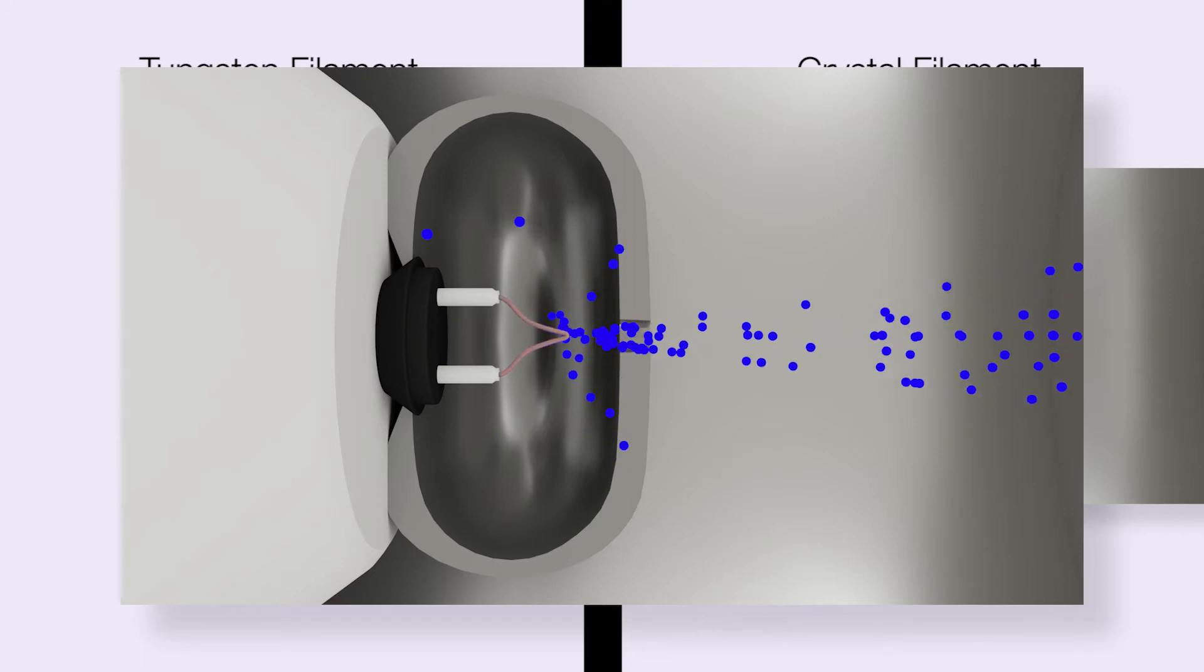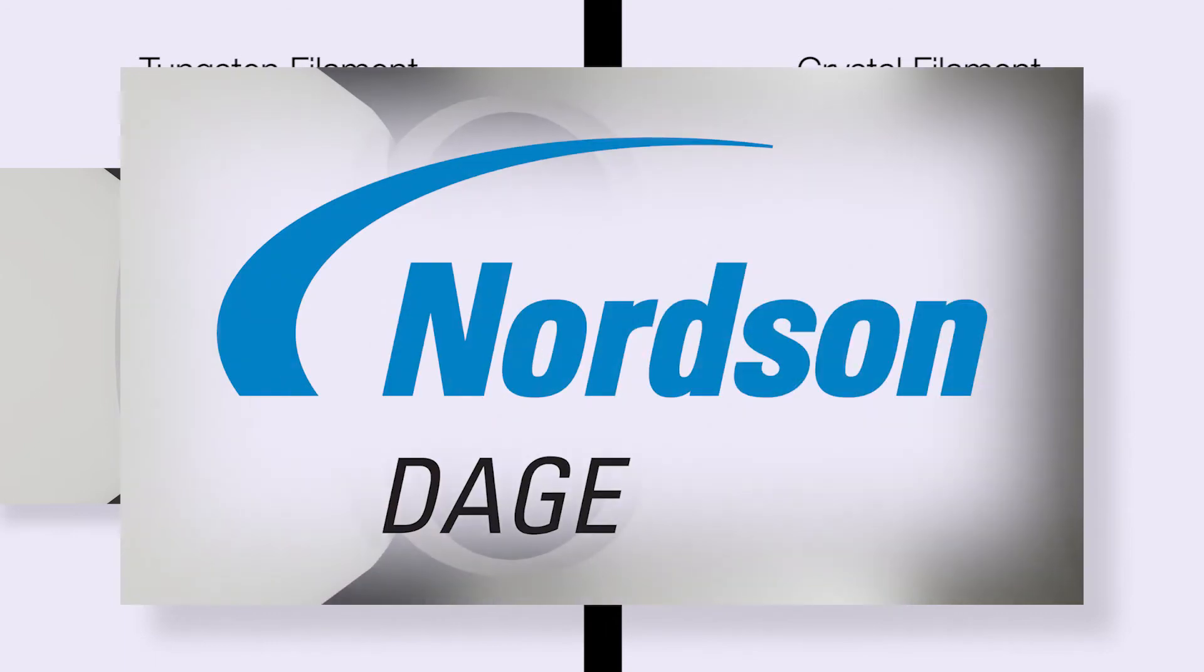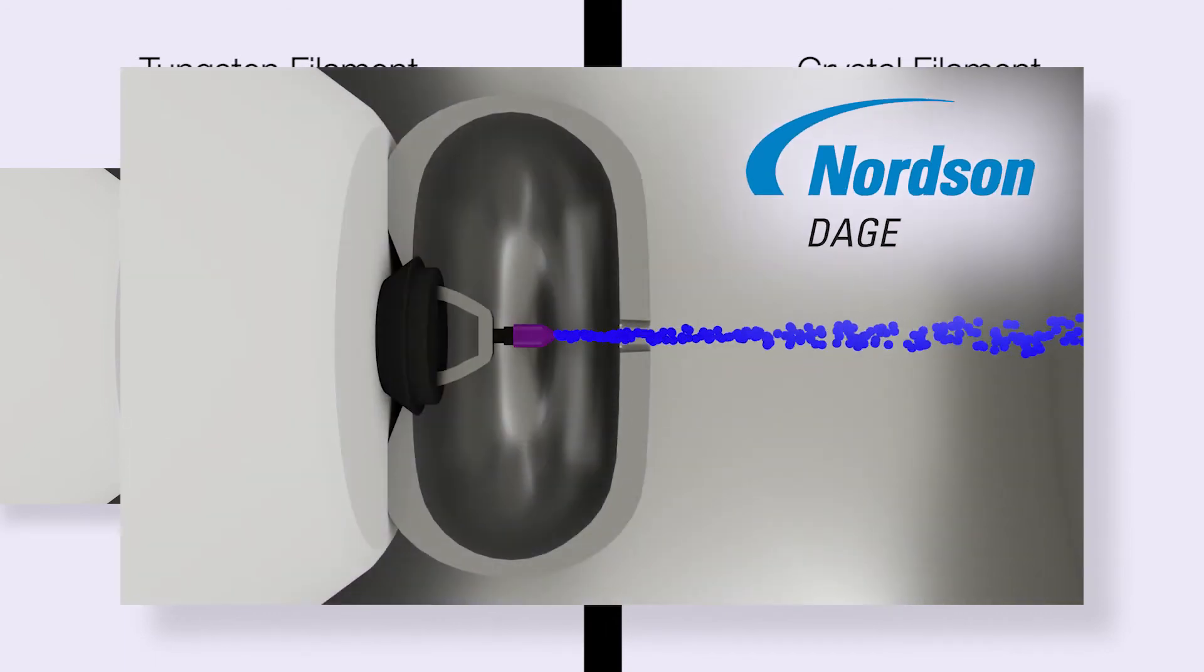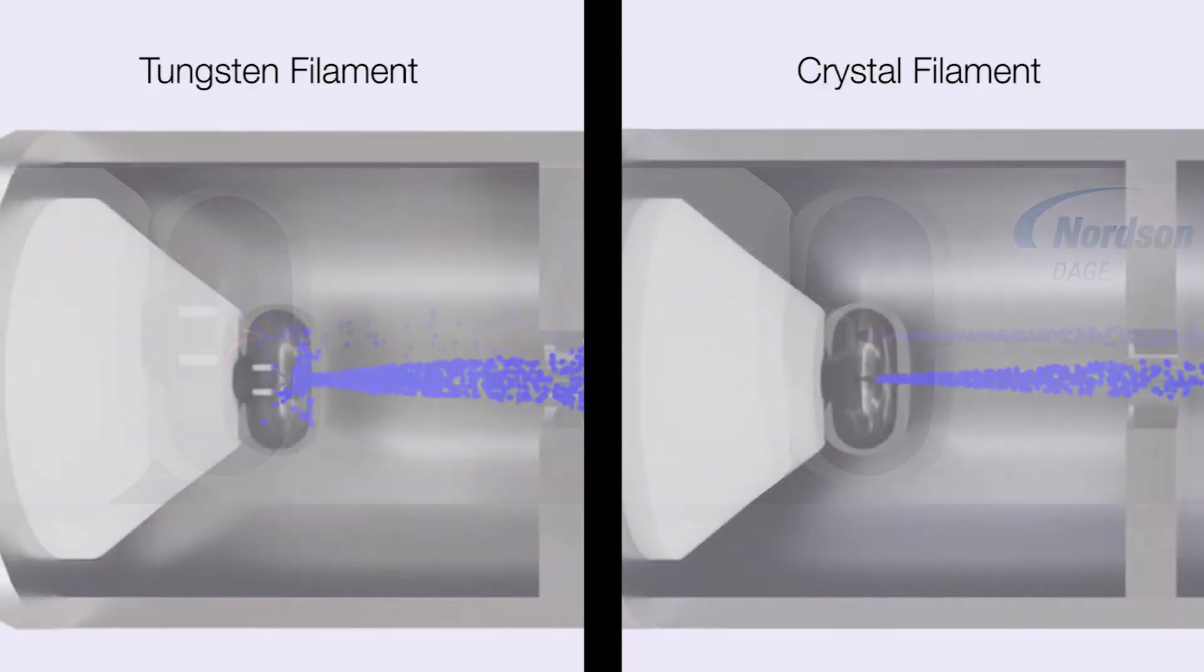They are hard to focus, especially at high power. Nordson Dage use crystal filaments which produce a narrow, high quality beam of electrons, making them easy to focus whatever the power level.